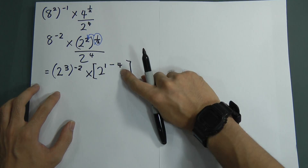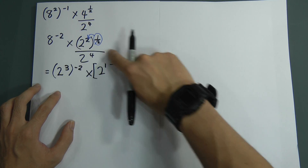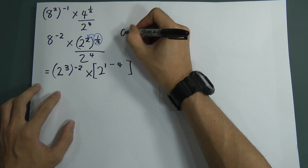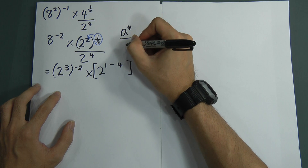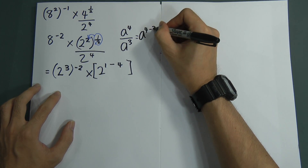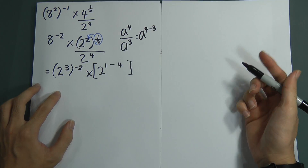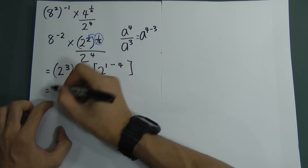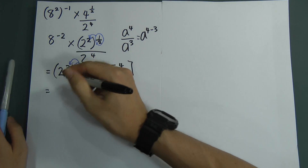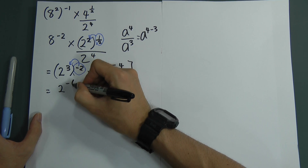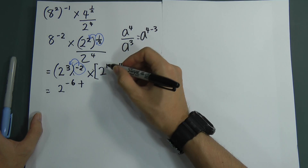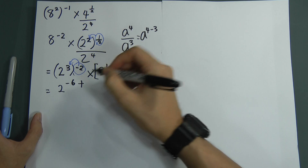Do you see this? This one I can rewrite. Because this is 2 to the power of 1 divided by 2 to the power of 4 — it's something like a to the power of 4 divided by a to the power of 3, which we can write as a to the power of 4 minus 3, because it's divided. So I just multiply negative 2 into the 3, and I get 2 to the power of negative 6. Plus means we add in the power: 1 minus 4 gives negative 3, so plus negative 3.